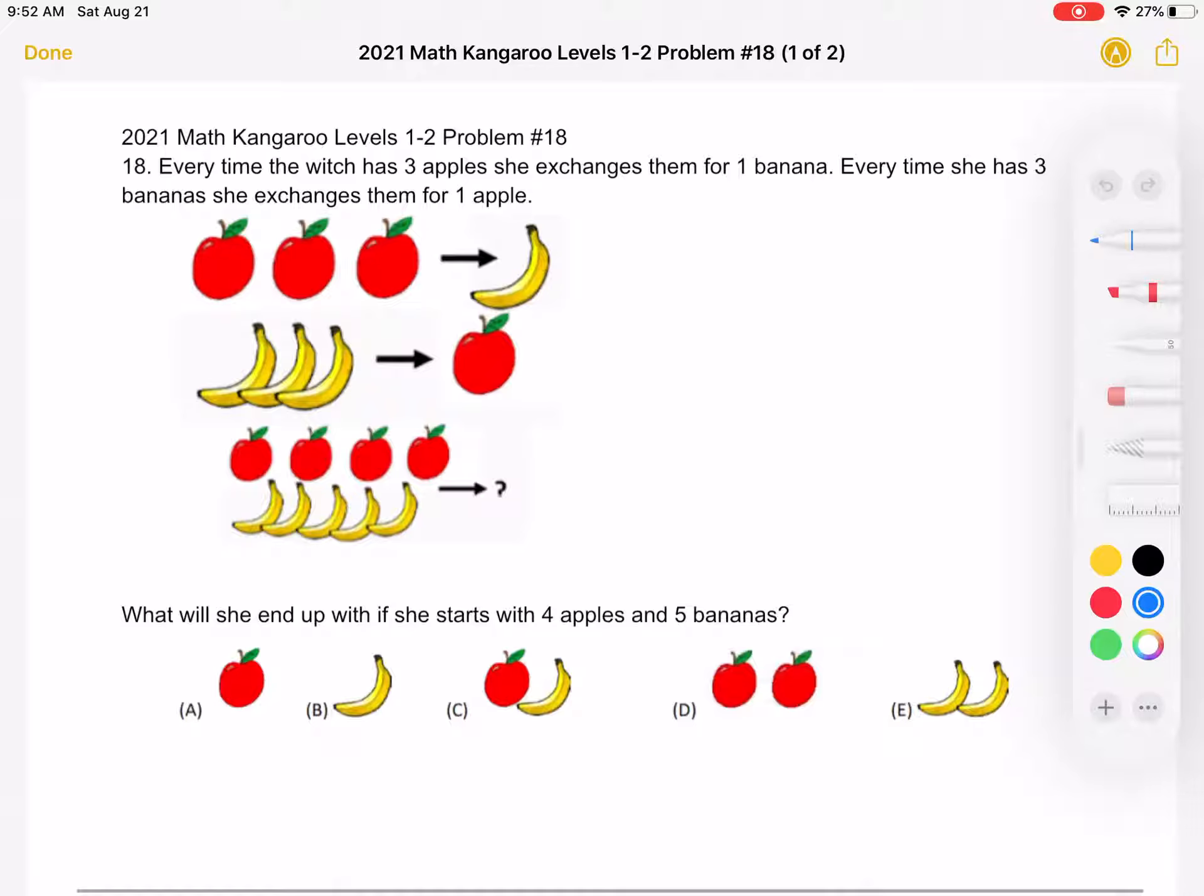Every time she has three bananas, she exchanges them for one apple. What will she end up with if she starts with four apples and five bananas? A: one apple, B: one banana, C: one apple and one banana, D: two apples, or E: two bananas.